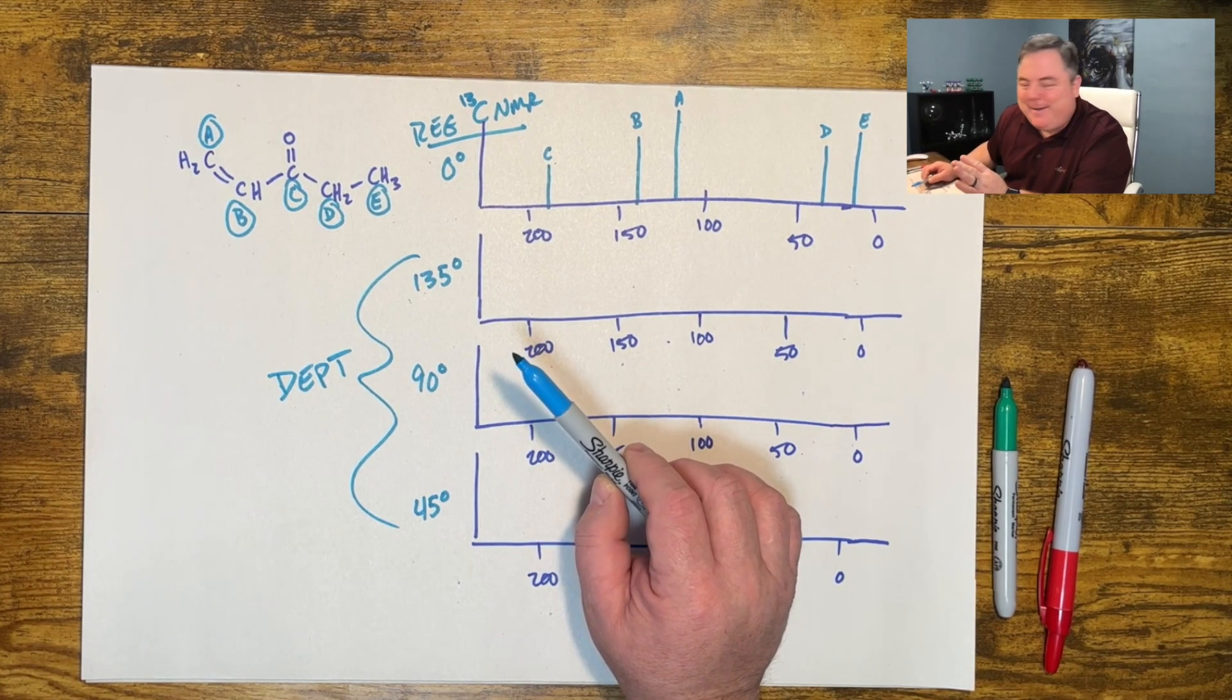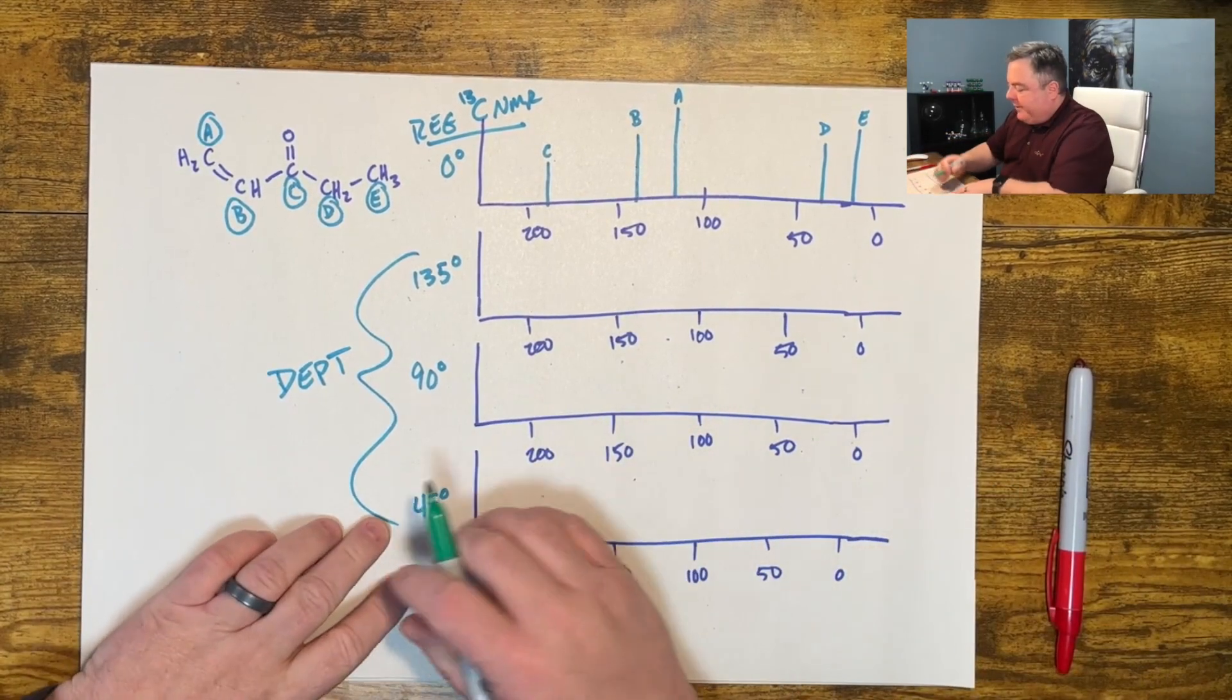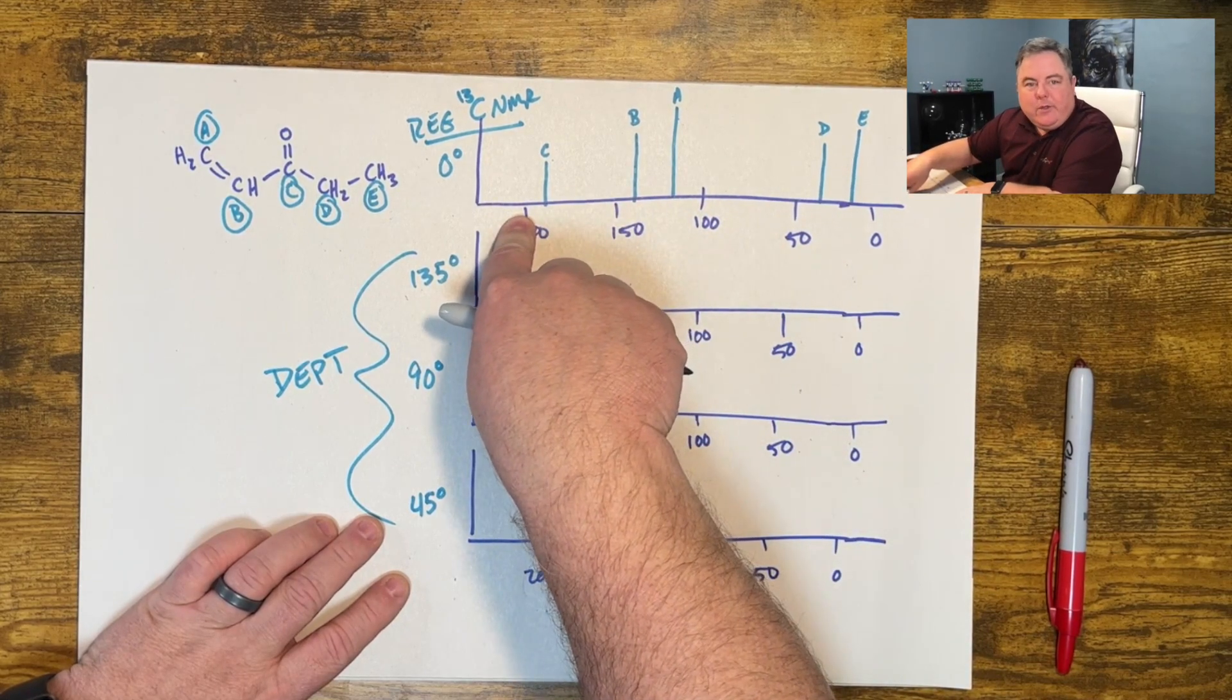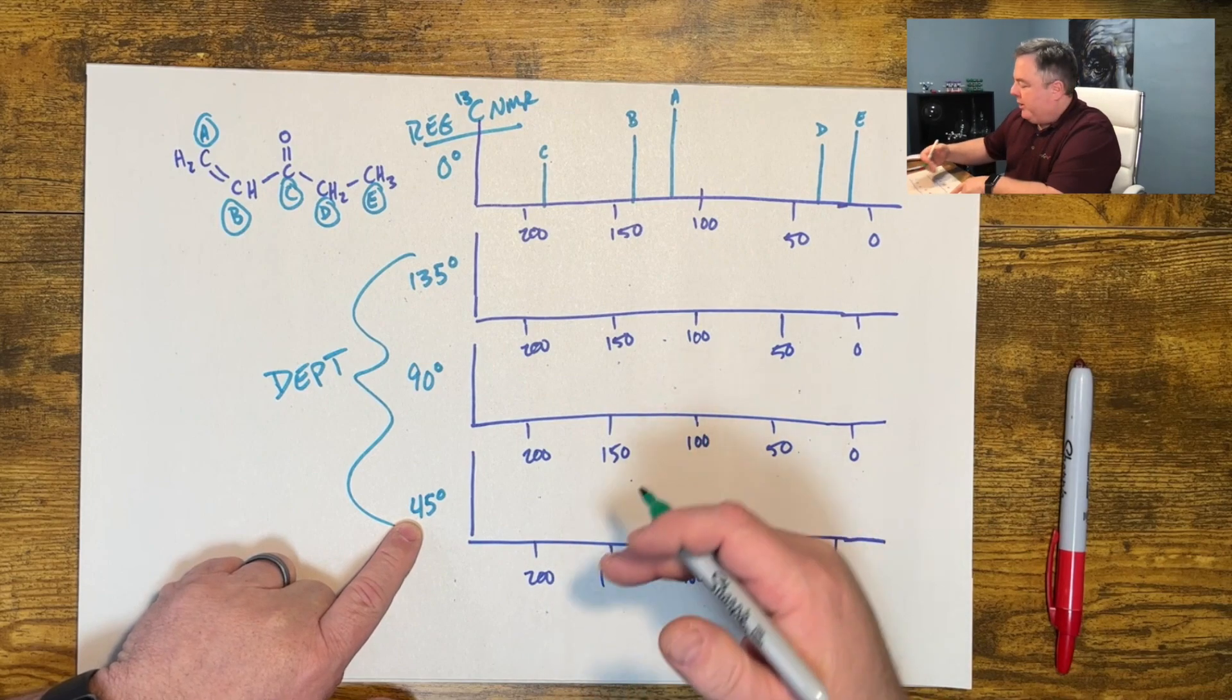What I want you to know is for these different locations they tell us something about the carbons that we saw in the regular carbon NMR. In this spectrum, the 45 degree one, which is usually at the bottom of these three.